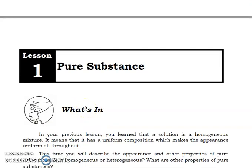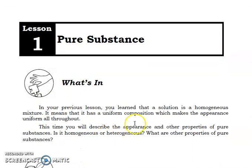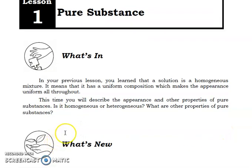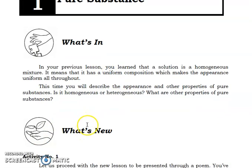Let's move on. Our lesson one is entitled Pure Substance. Let's move on with the part of What's In. In your previous lesson, you learned that a solution is a homogenous mixture. It means that it has a uniform composition which makes the appearance uniform all throughout. This time, we will describe the appearance and other properties of pure substances. Is it homogenous or heterogeneous? What are the other properties of pure substances?